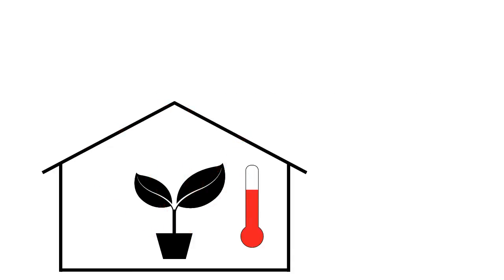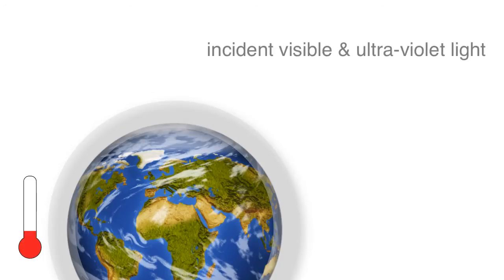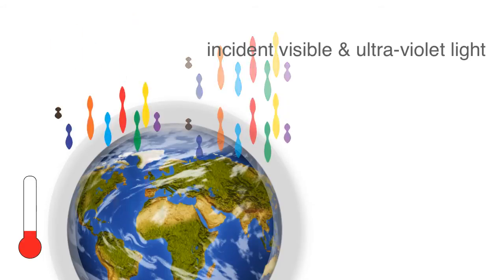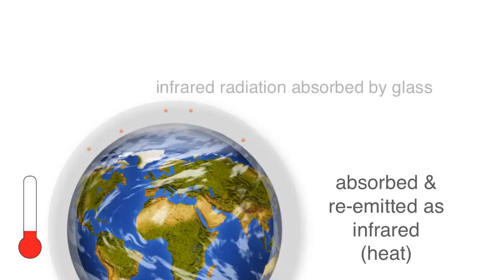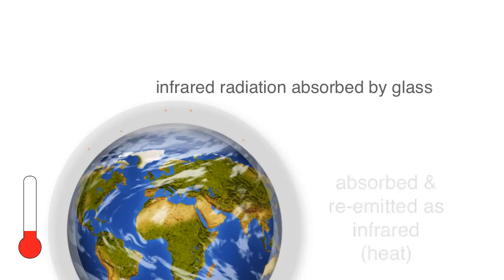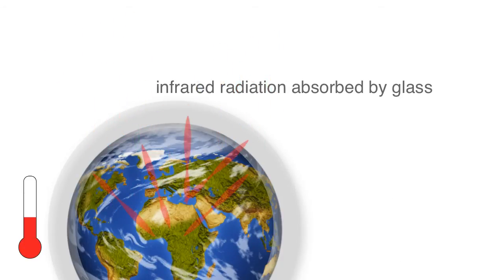The same phenomenon is happening at a global scale. We replace the greenhouse with the earth and its atmosphere, with the atmosphere playing the role of the greenhouse glass. How effective is the atmosphere at trapping the infrared radiation? That depends on the gases in the atmosphere.